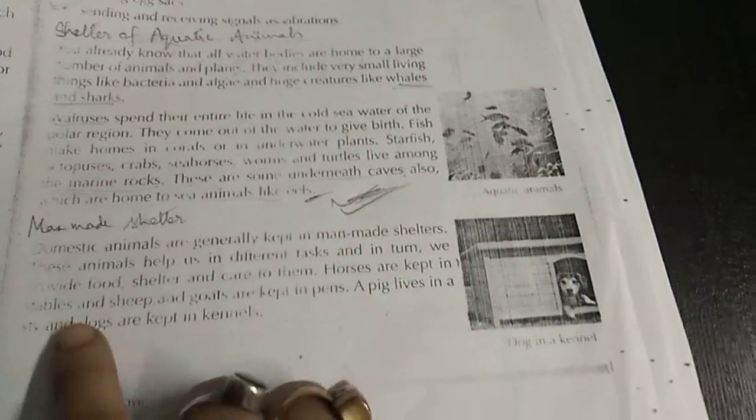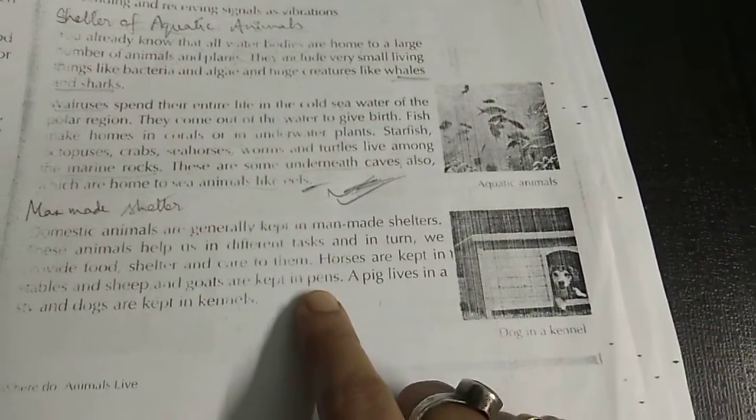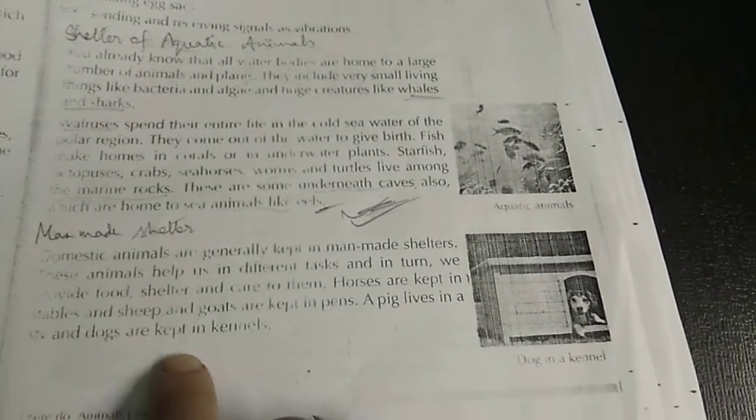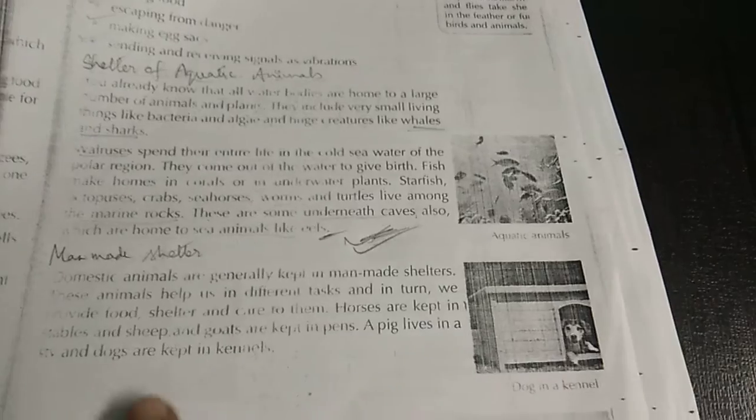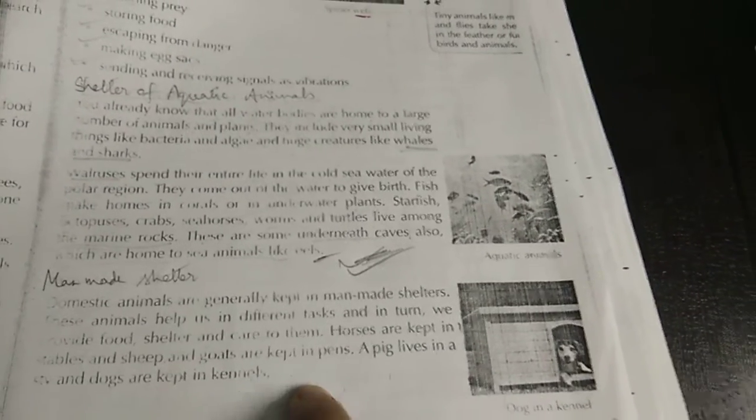Horses are kept in stables, sheep and goat are kept in pens, a pig lives in a sty and a dog are kept in kennels. These are all man-made shelters. Sty, kennel, pen - these homes are made by men, so they are known as man-made shelters.